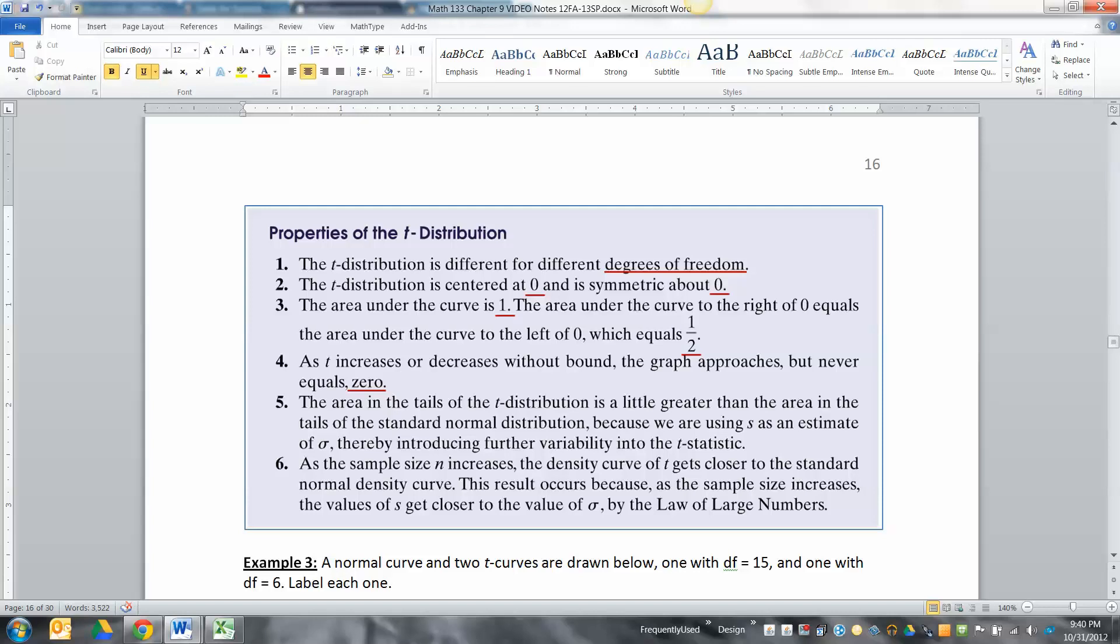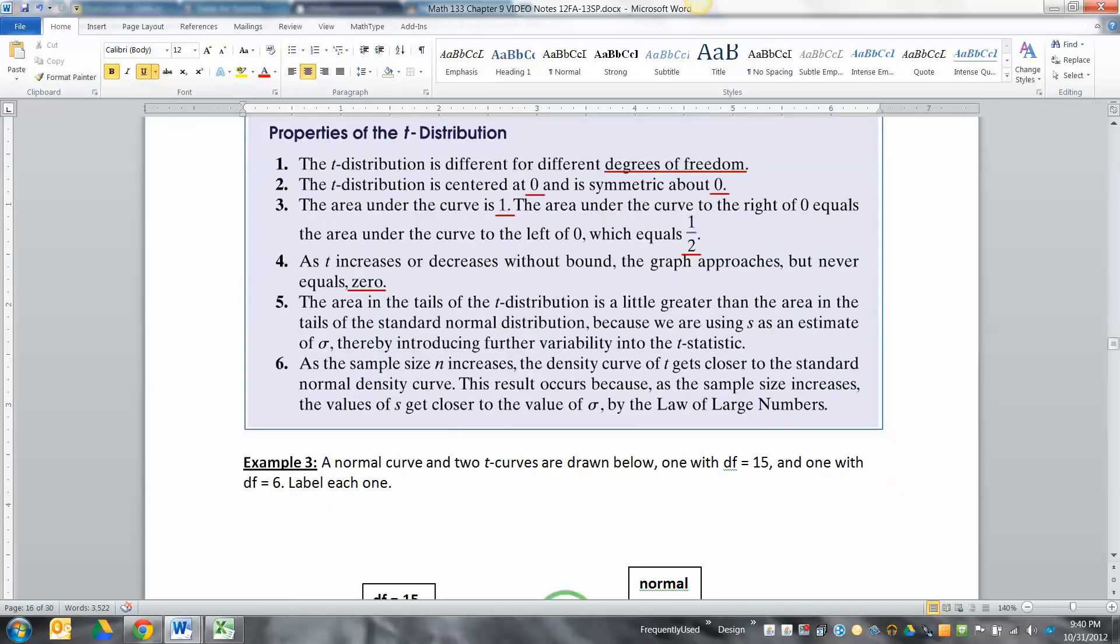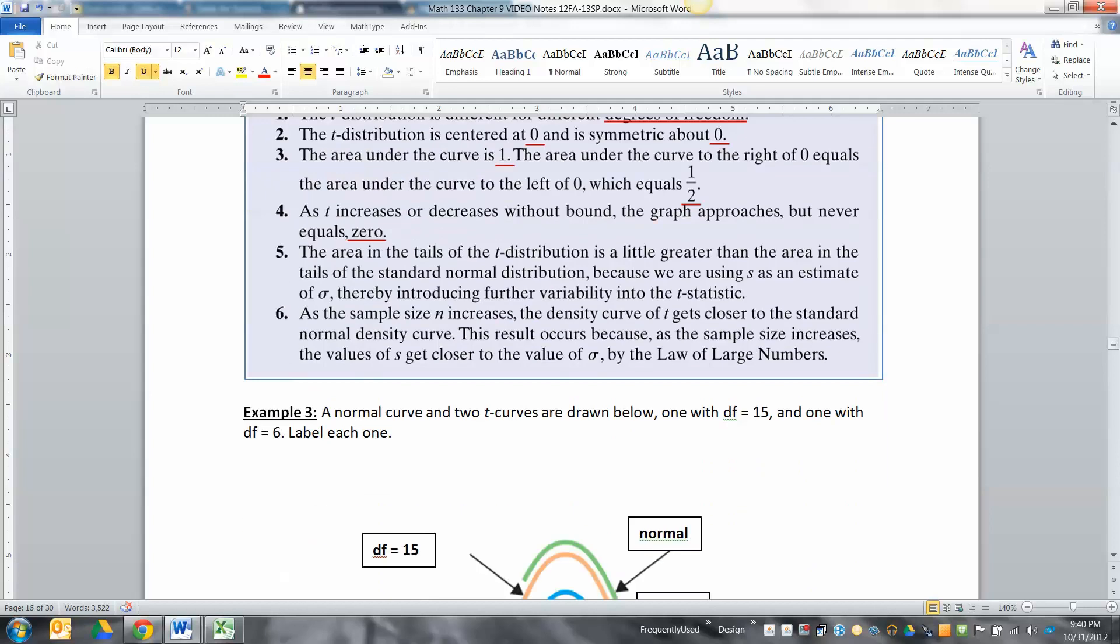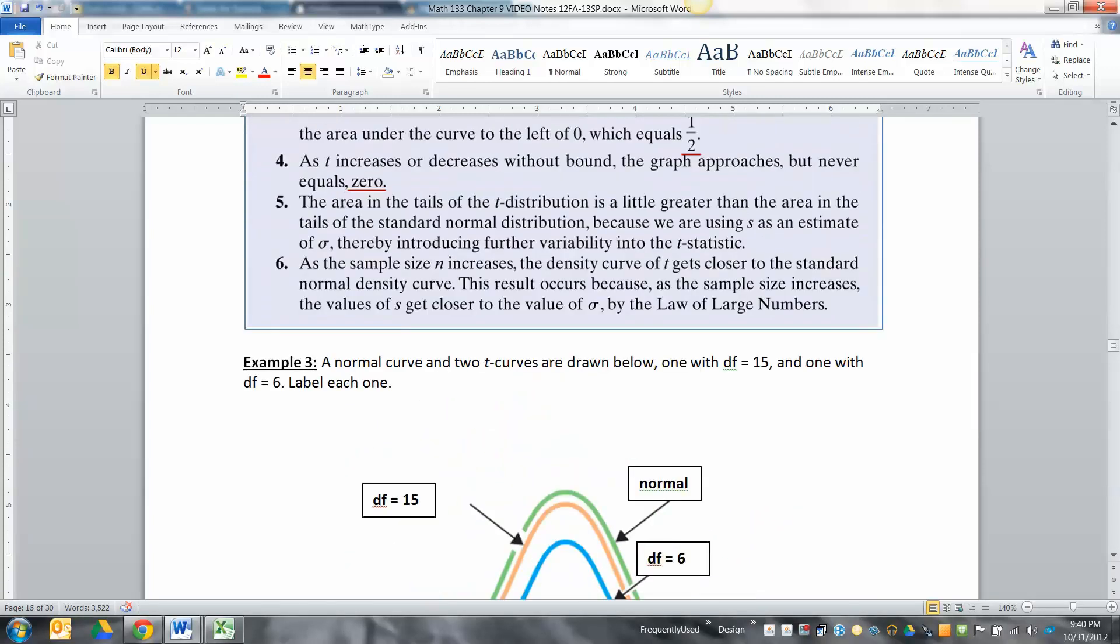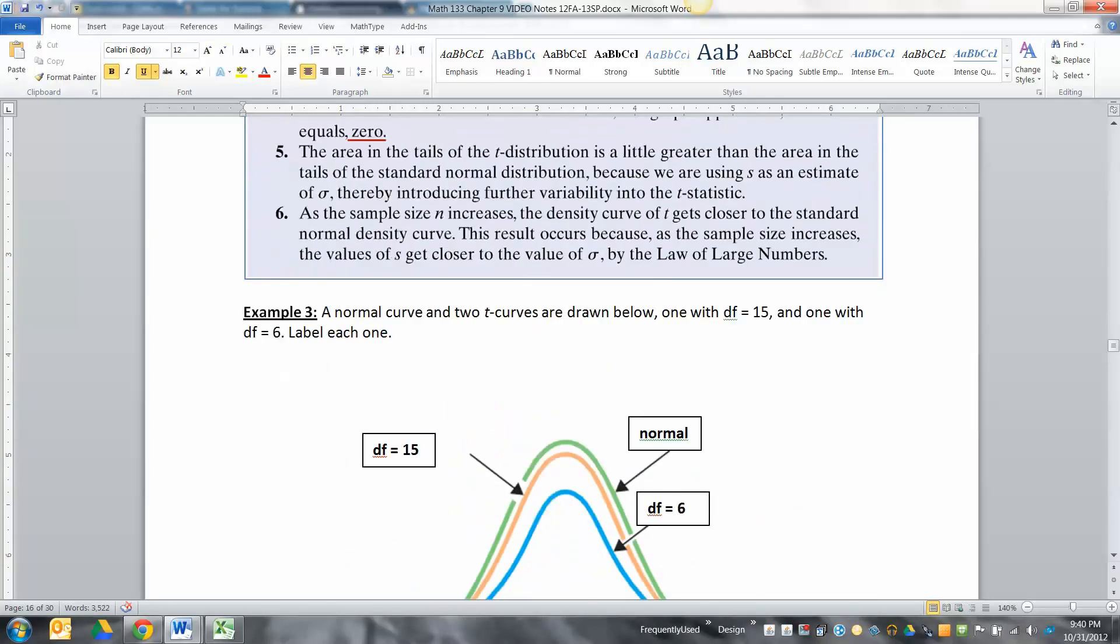As t increases or decreases without bound, the graph approaches but never equals zero. What they're talking about there is the asymptote thing - how the t-curves get closer and closer to the x-axis down here but they never really reach it.